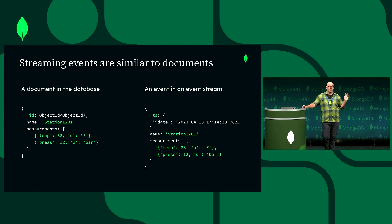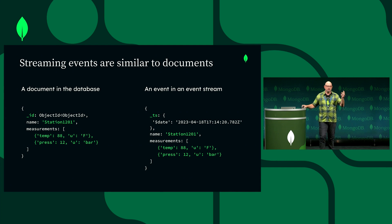MongoDB cares a lot about developers — that's obvious. What we wanted to do with stream processing is ensure the developer paradigm was very clear and clean, leveraging the things that MongoDB has done for many years: the document model, the ease of development, things like this. It's pretty simple.